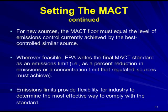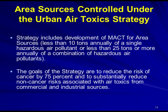Whenever feasible, EPA writes the final MACT standard as an emission limit — meaning a percent reduction in emissions or a concentration limit that regulated sources must achieve. Emission limits provide flexibility to industry to determine the most effective way to comply with the standard. We also have area sources — the smaller sources — which are also controlled under EPA's Urban Air Toxic Strategy. Area sources are those emitting less than 10 tons annually of a single hazardous air pollutant, or less than 25 tons annually of a combination of hazardous air pollutants.